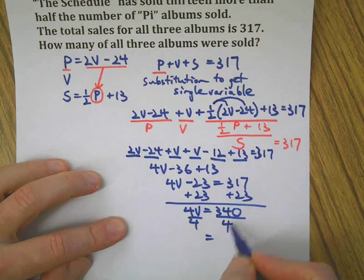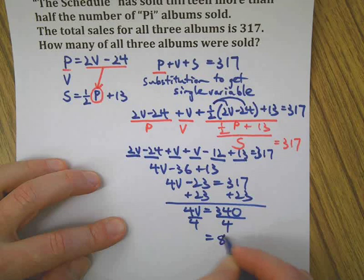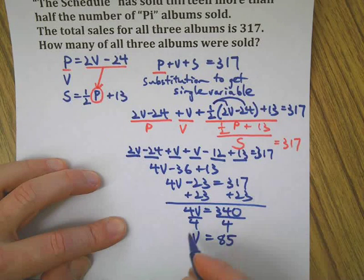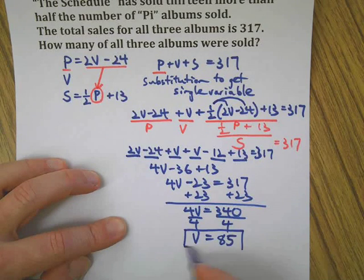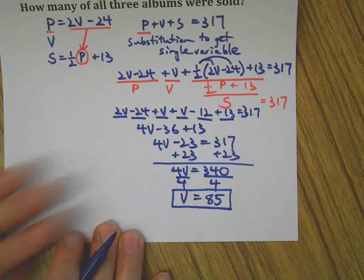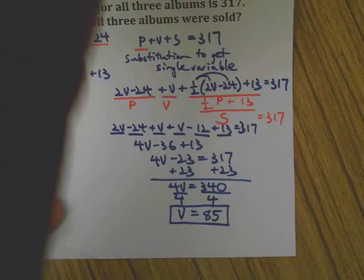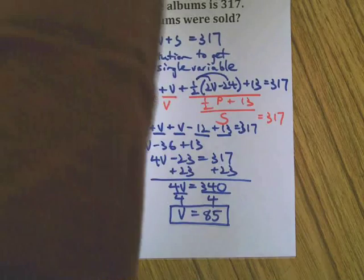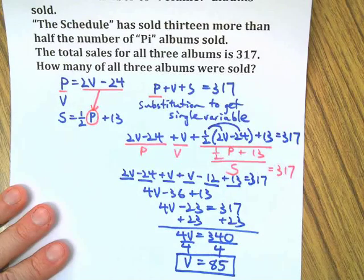And I believe that's 85, because 4 times 80 is 320. 85. So what that means is the number of Volume albums sold was 85. Let's take that 85 back up to the original equation.